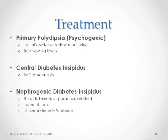In nephrogenic diabetes insipidus, thiazide diuretics may be used. This is due to the paradoxical effect of thiazides. Thiazide diuretics result in water excretion from the body, so now the body is in a low-volume state. The renin-angiotensin-aldosterone system is activated, leading to increased sodium and water reabsorption at the proximal tubule. Therefore, less sodium and water is delivered to the distal tubule and collecting duct, thus lowering the overall urine output.